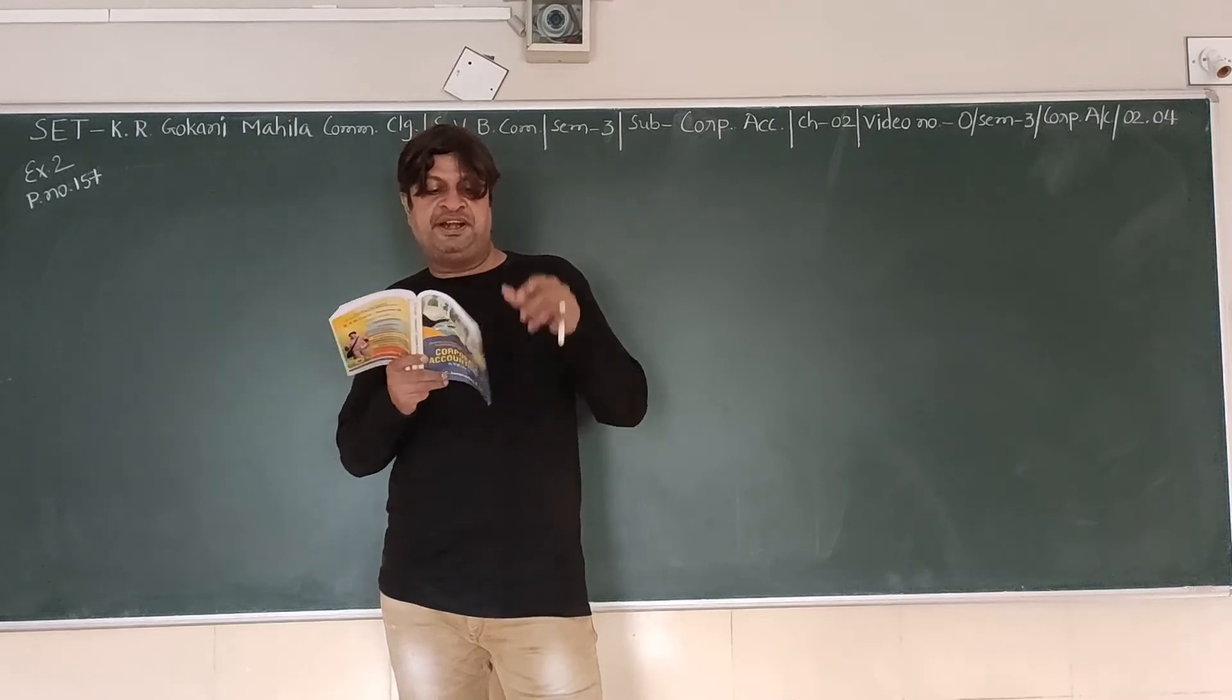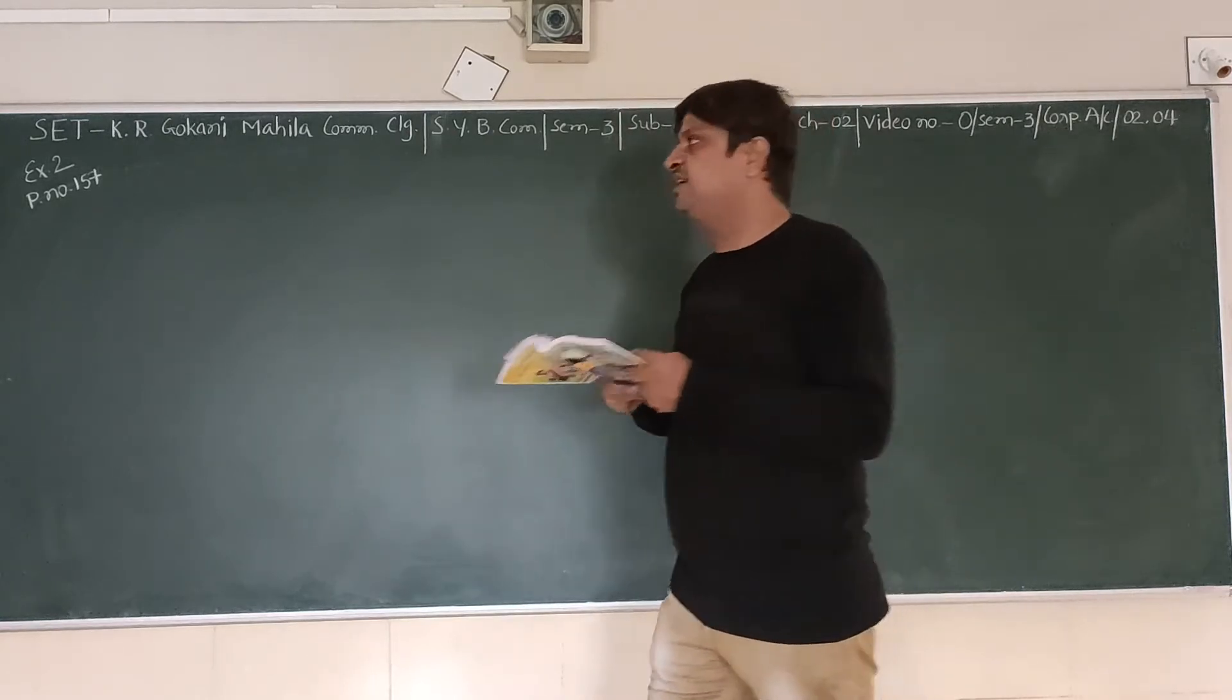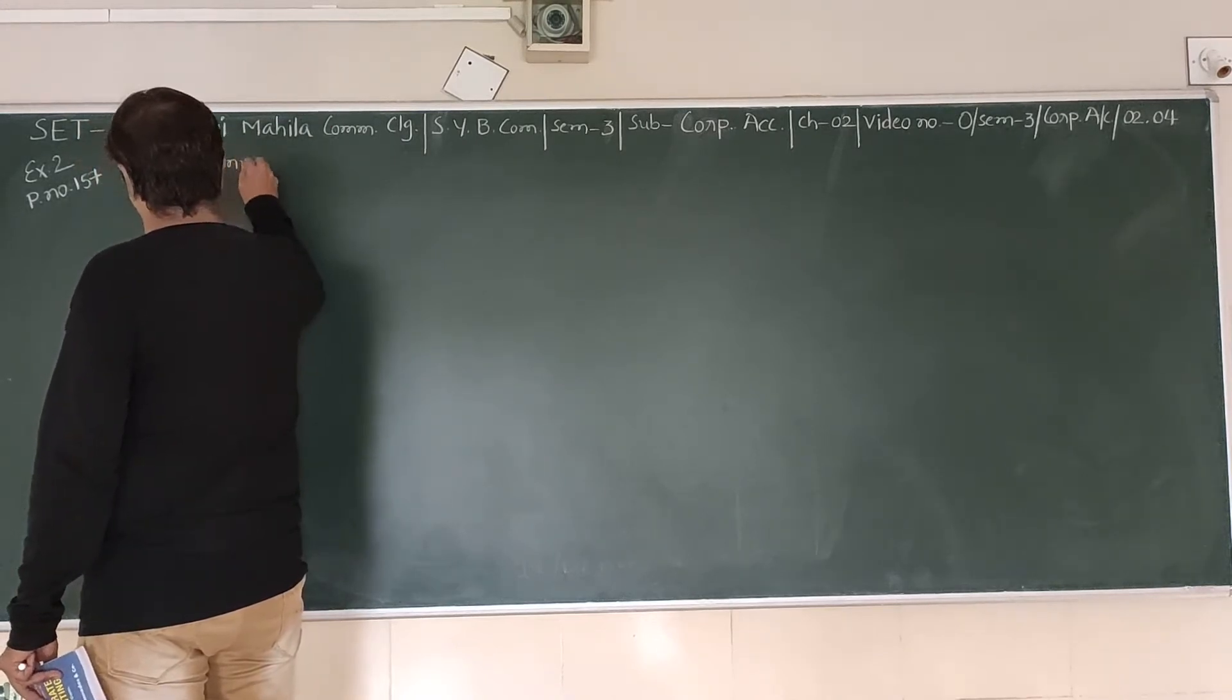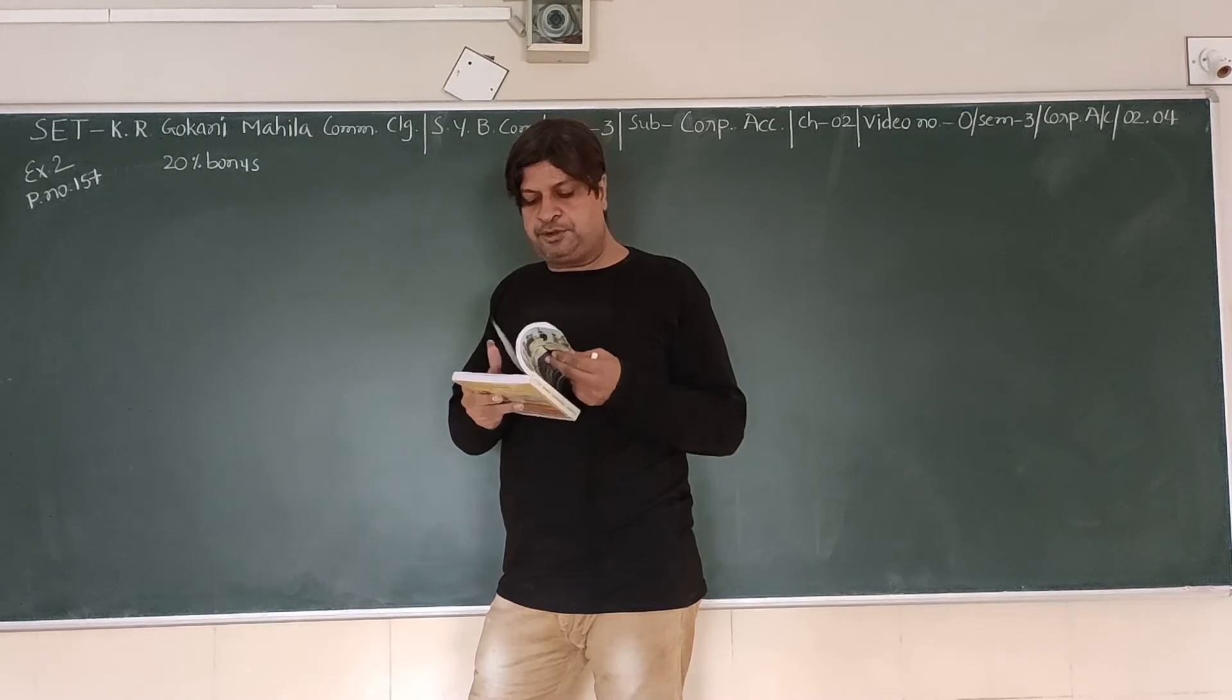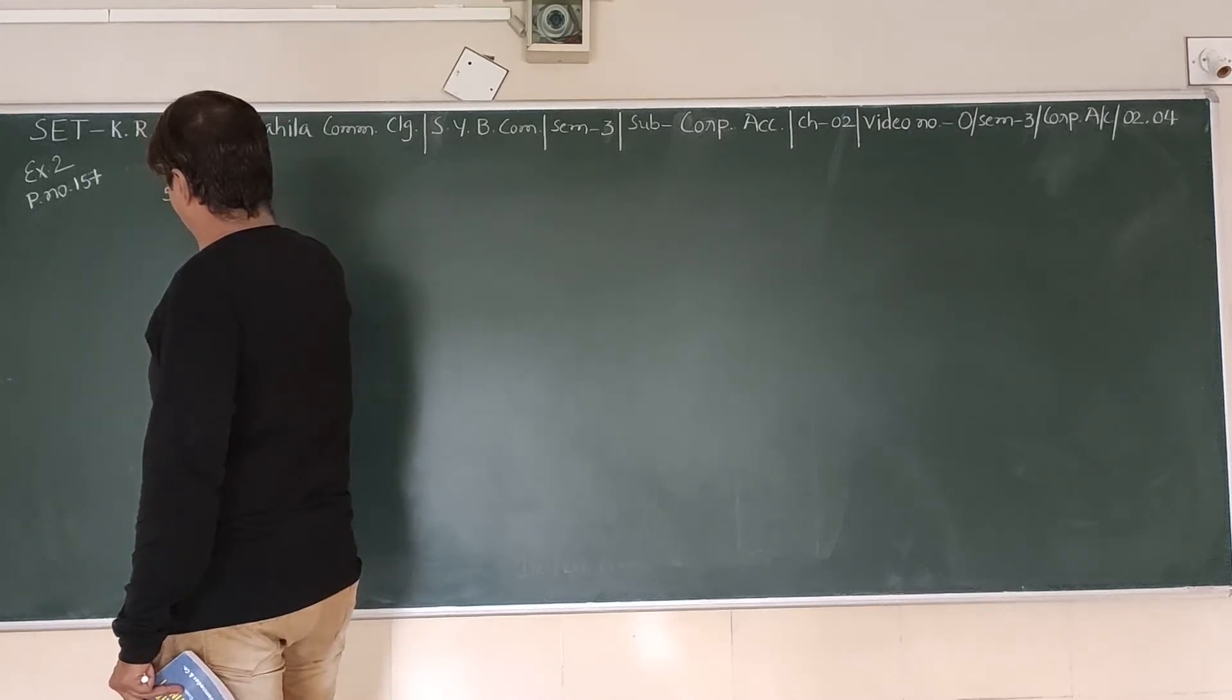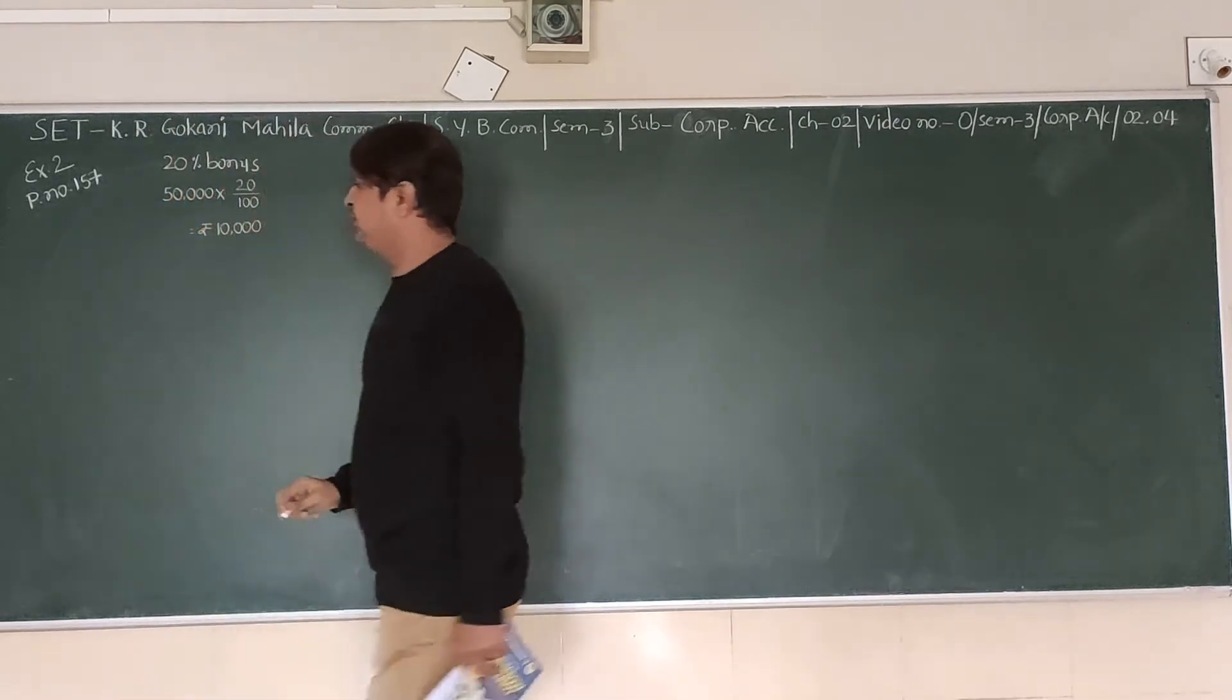We are given that 20% bonus on ordinary shares is to be given. If 20% bonus is to be given on 50,000, that is 50,000 into 20%, it means we are to declare a bonus of 10,000 rupees.